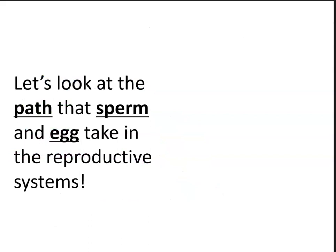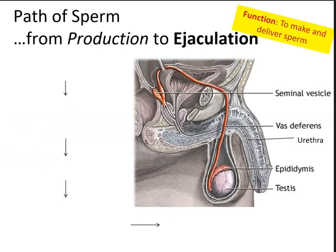Now we're going to take a look at male reproductive anatomy — the path that sperm will take — and then female reproductive anatomy and the path that the egg will take. The function of the male gonads and male reproductive system is to make and deliver sperm.